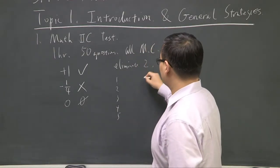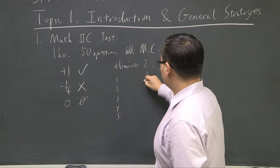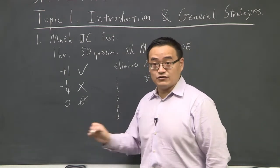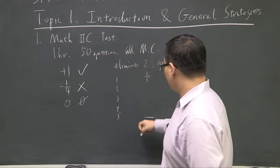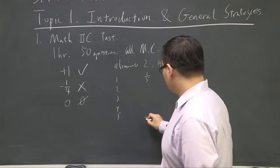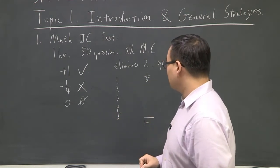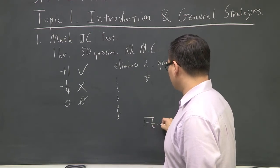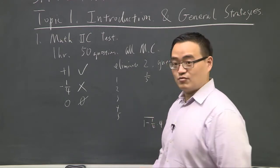If you take a random guess, right, you have five answers. If you take a random guess, your chance getting right is one-fifth, right? Just random, completely random. You don't eliminate anything, you take a random guess. And for five of them, you're going to get five questions. You're basically going to get one of them right, so you're going to get one point, but you're going to get four of them wrong. You get one-fourth of the point deducted times four, you're going to get zero point.